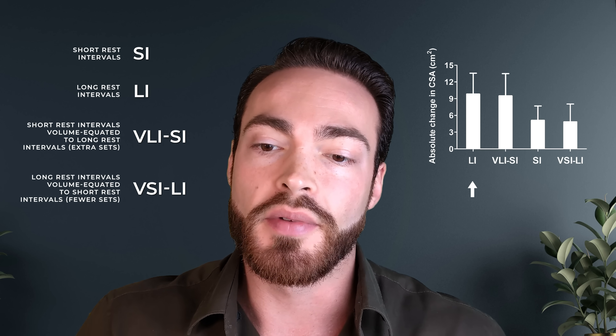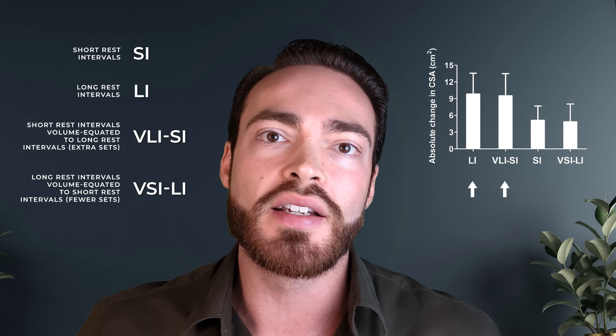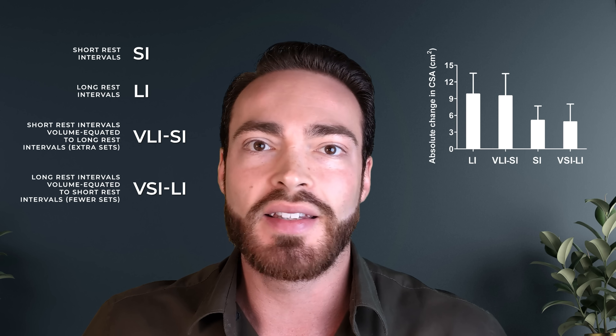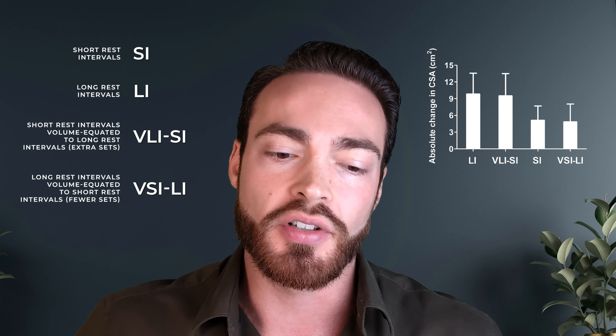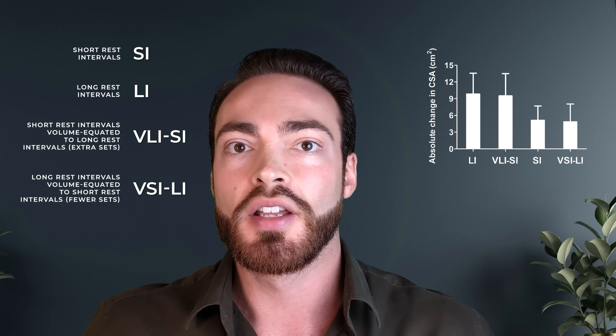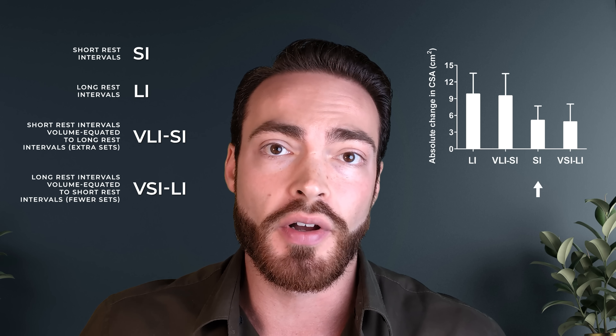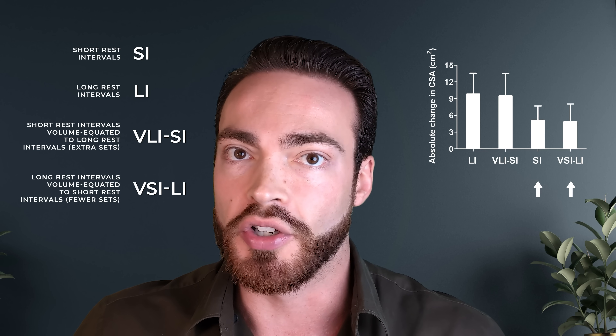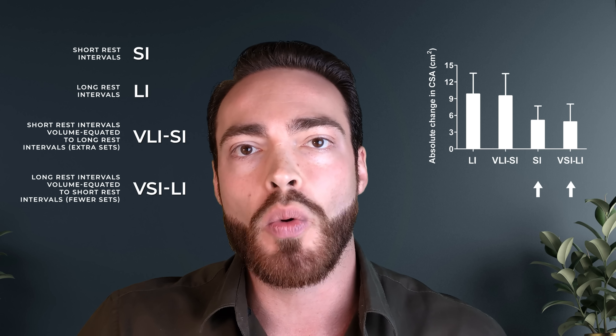Concretely, the researchers compared muscle growth from training with short rest intervals, long rest intervals, short rest intervals with volume equated to the longer rest intervals (meaning they had to do extra sets), and long rest intervals equated to the short rest intervals (meaning fewer sets). Here in the graph you can see the results: the long rest interval group had the best gains together with the short rest interval group that had volume equated to the long rest interval group — in other words, the two groups that did the most volume. It didn't matter whether you got that volume from resting longer after each set or from doing more sets. The short rest interval group and the volume-equated long rest interval group had worse results. Your rest interval itself doesn't seem to have a lot of effect on muscle growth — the effect is mediated entirely by training volume.